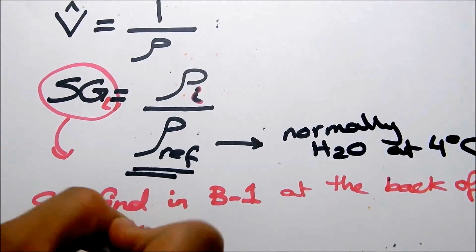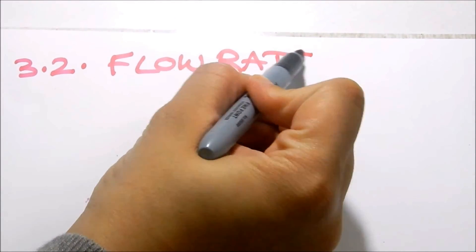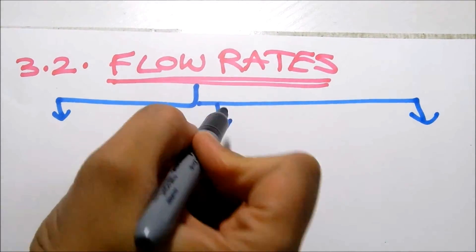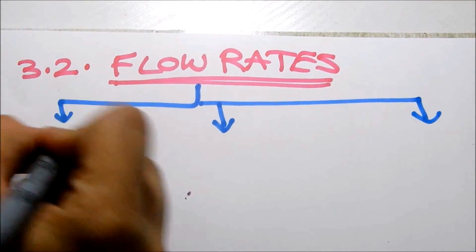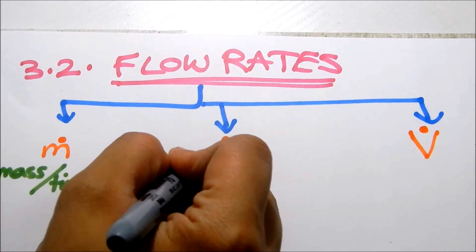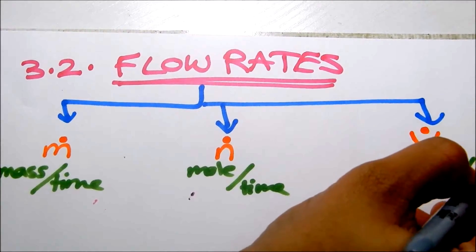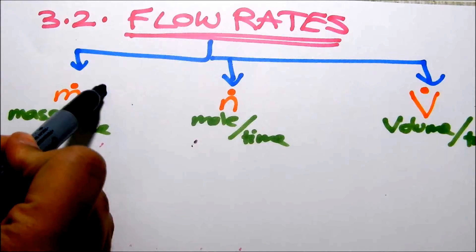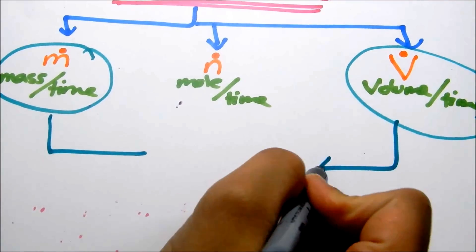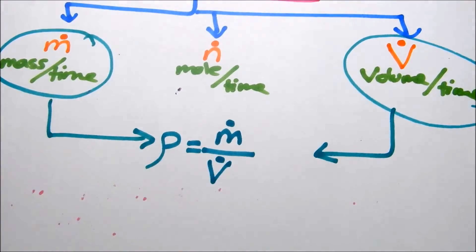Section 3.2, we have the flow rates. So flow rates, what are they? There are three types that we have. There is the mass flow rate m dot, there is the mole flow rate n dot, and there is the volumetric flow rate which is V dot. Mass is mass over time, mole flow rate is mole over time, volumetric flow rate is volume over time. They are dependent on each other, mass and volume, but you can relate them by the equation of density. So you get mass flow rate over volumetric flow rate.